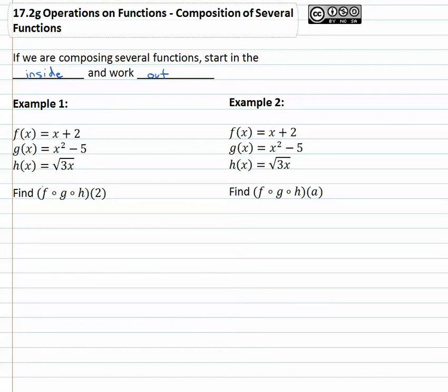So when we see f of g of h of 2, and we have these three functions: f(x) = x + 2, g(x) = x² - 5, and h(x) = √(3x). What we're asked to find then is f(g(h(2))). Make this one squiggly just so that I can show the difference between the parenthesis.